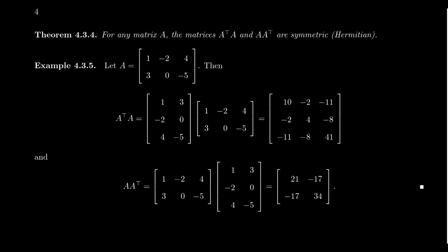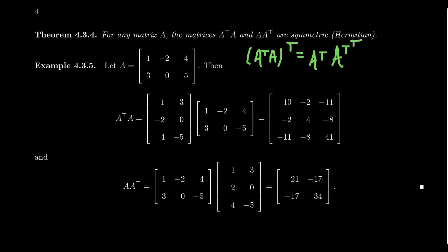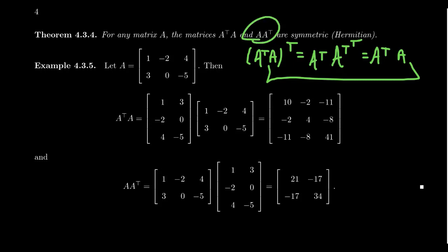It turns out we can build symmetric or Hermitian matrices very easily from any matrix. If you have any matrix A, it turns out that A transpose A and A A transpose are both symmetric matrices. The idea is: (A transpose A) transpose by the shoe-sock principle becomes A transpose times (A transpose) transpose, which equals A transpose A. So the matrix equals its own transpose. A similar calculation holds for A A transpose. For complex matrices, you replace the transpose with the conjugate transpose and the same argument applies.